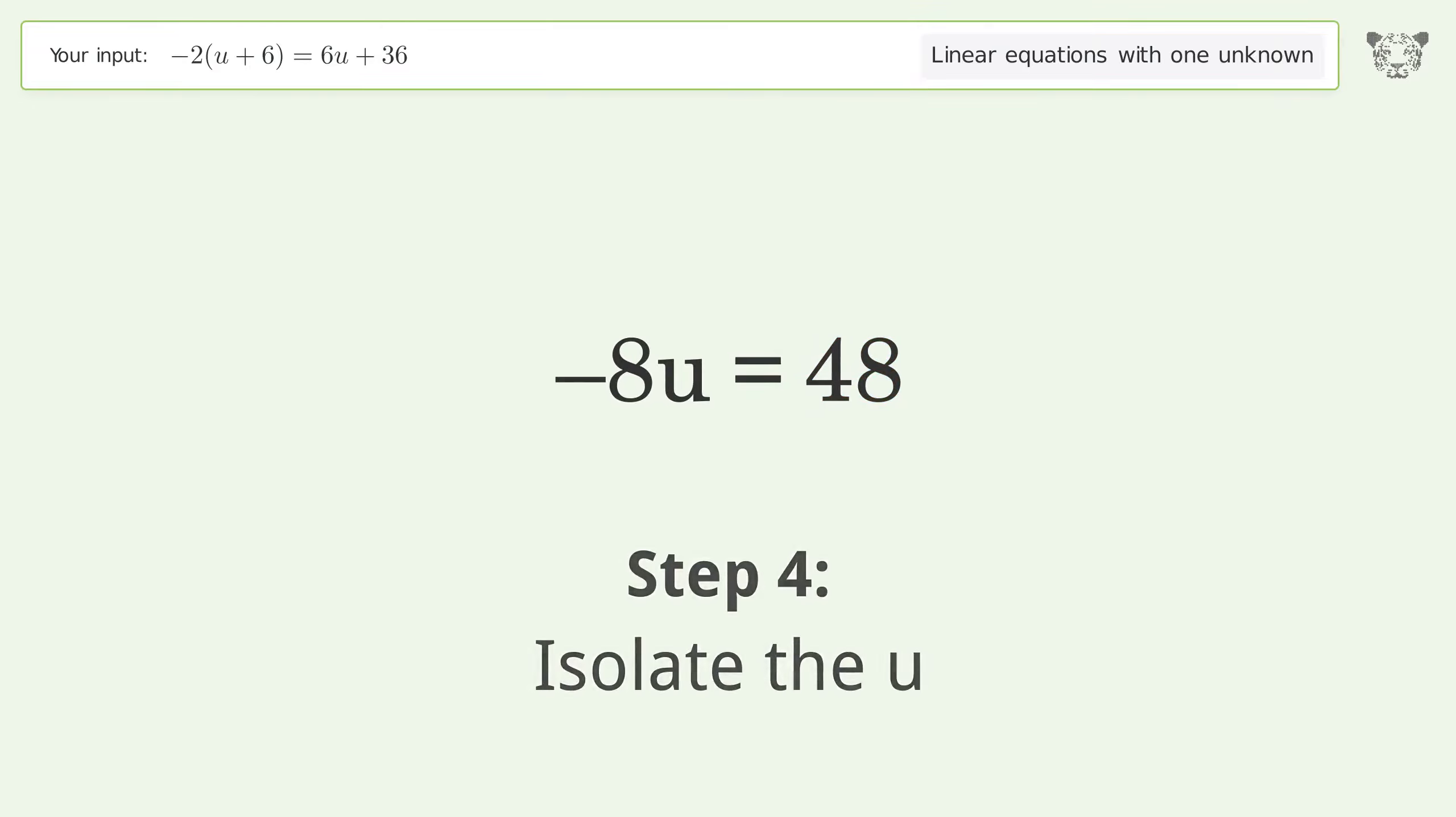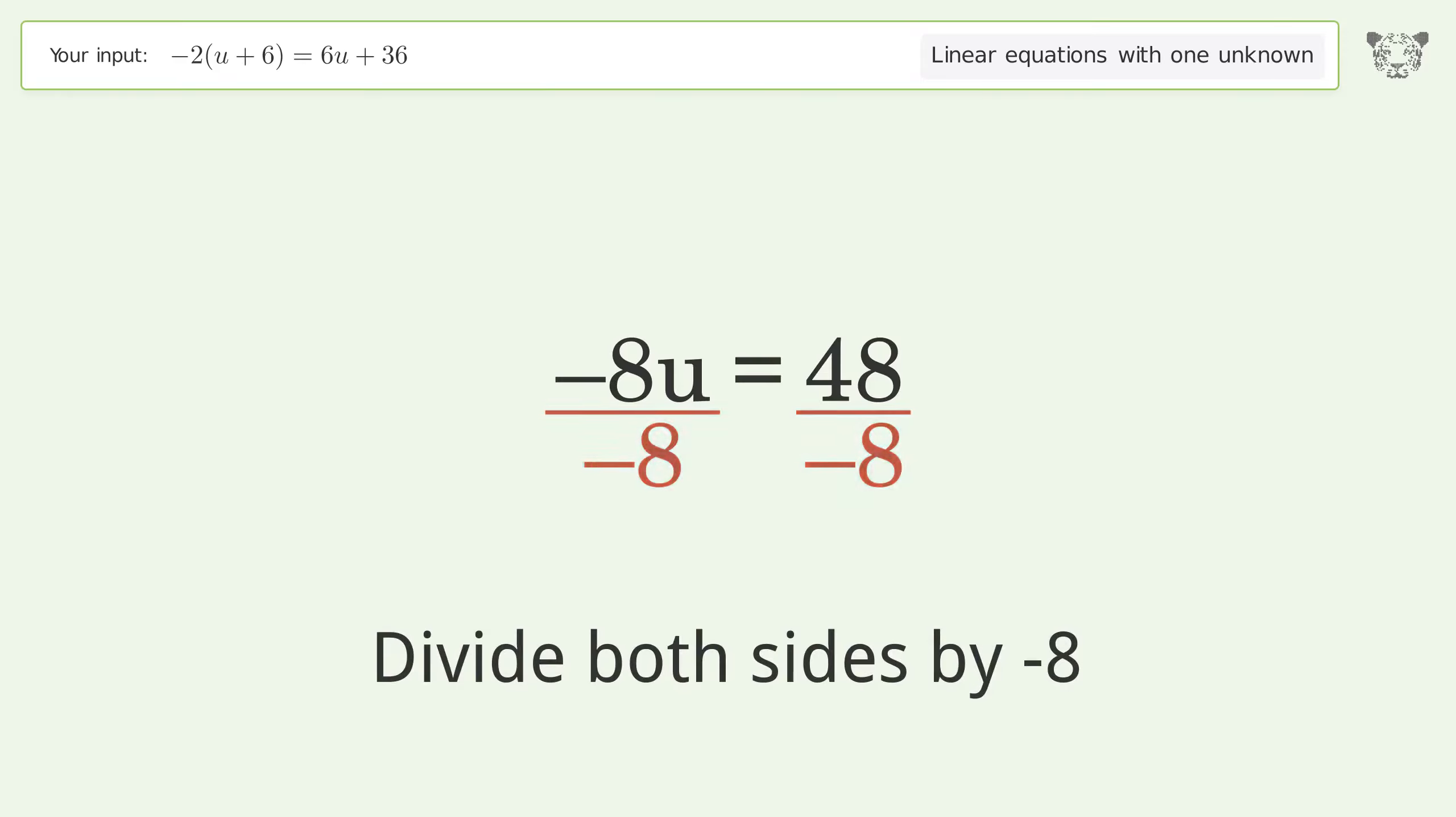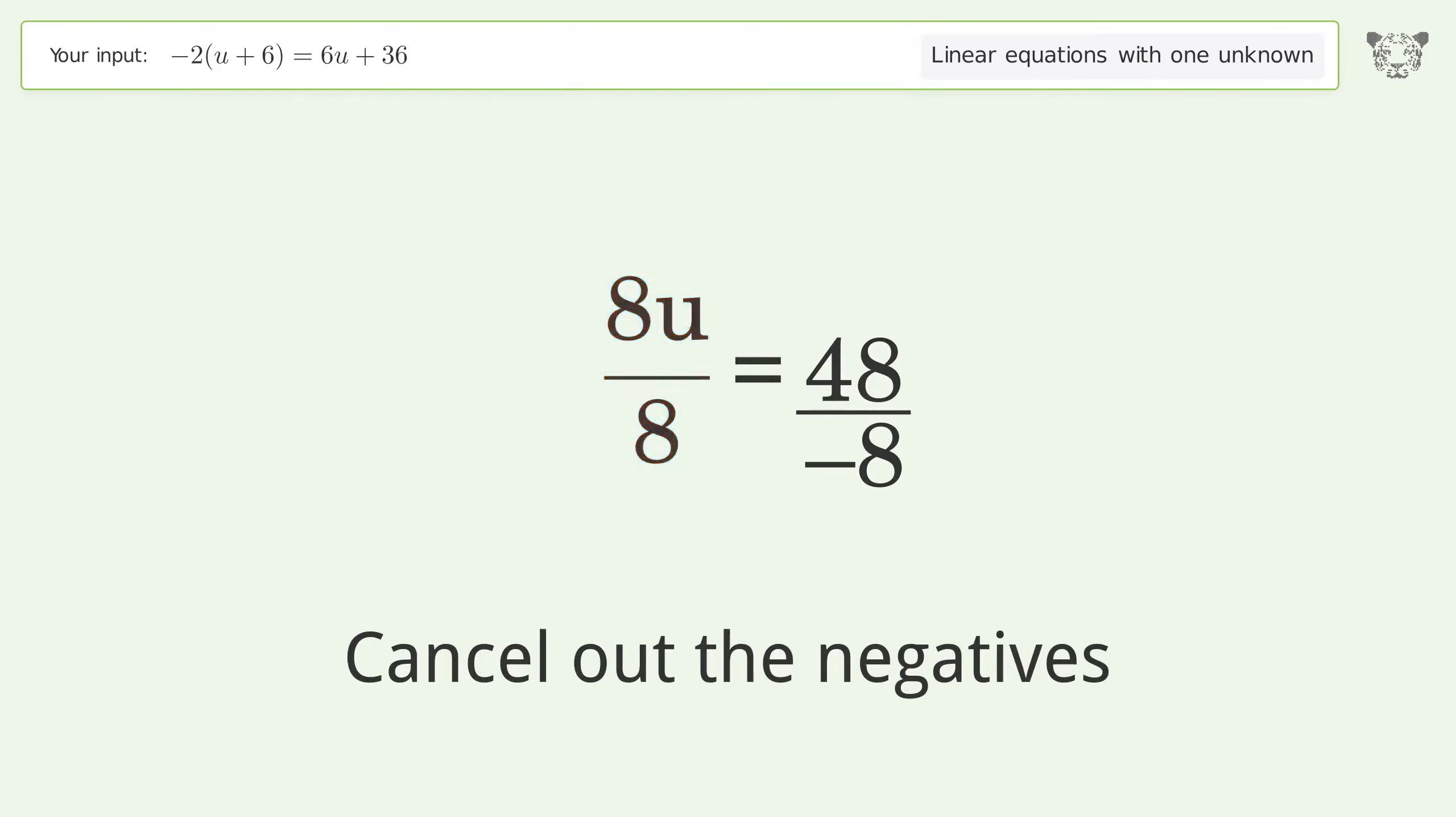Isolate the u. Divide both sides by negative 8. Cancel out the negatives, simplify the fraction.